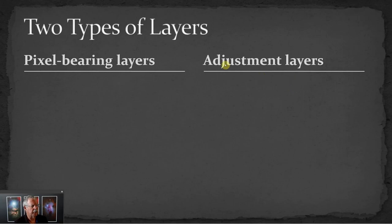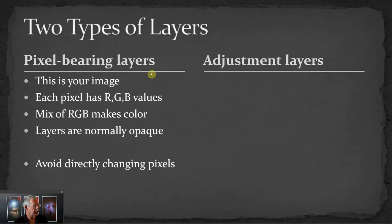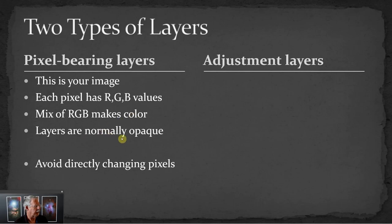There are really two types of layers: pixel-bearing layers and adjustment layers. A pixel-bearing layer is basically your image or a part of your image. Each pixel has RGB values if you're working with a color image, and of course it's the mix of red, green, and blue that creates the rainbow of colors. Layers are normally opaque, and we want to avoid directly changing pixels on a pixel-bearing layer because that would be considered a destructive step.